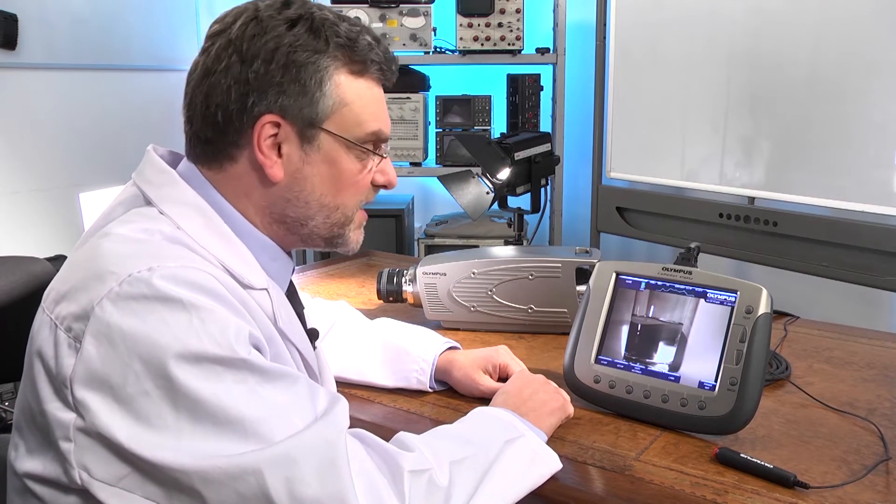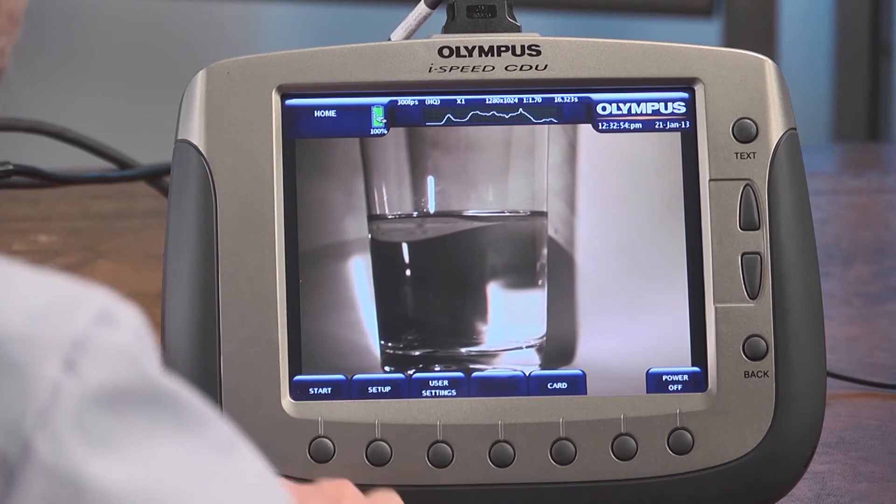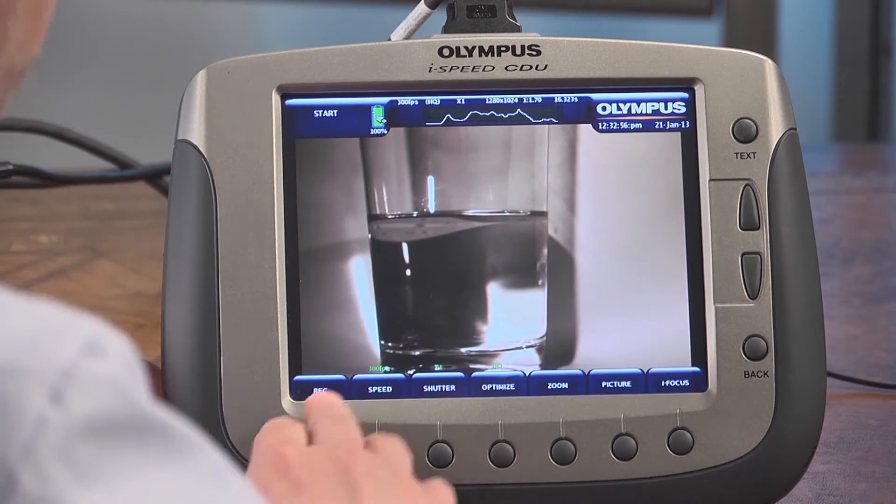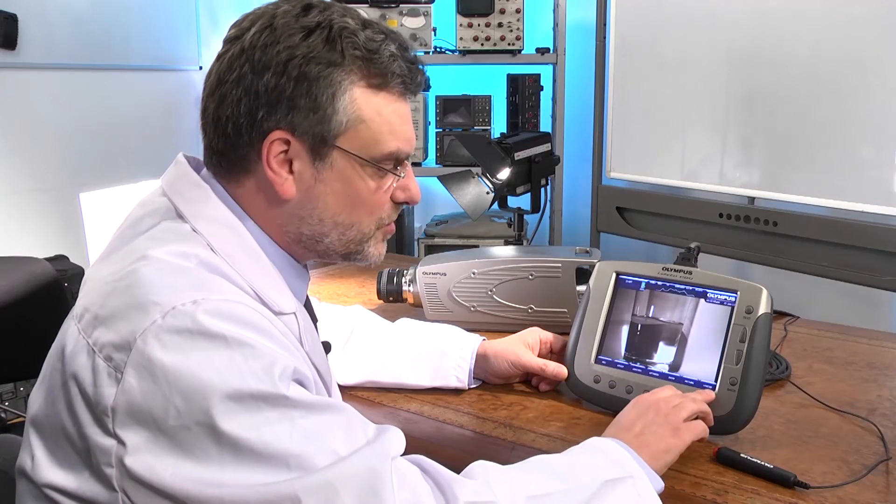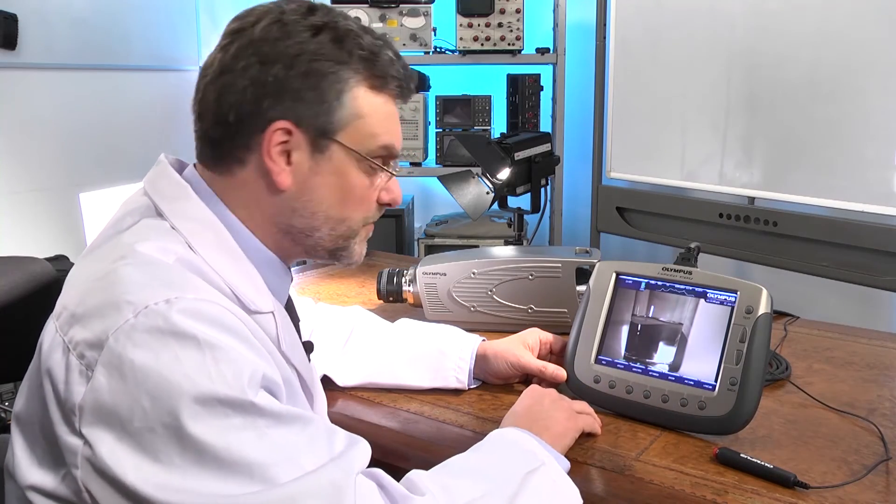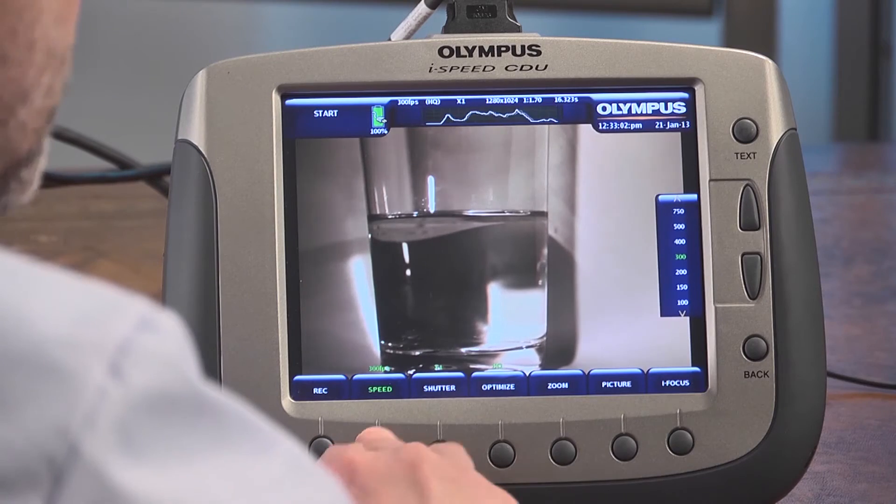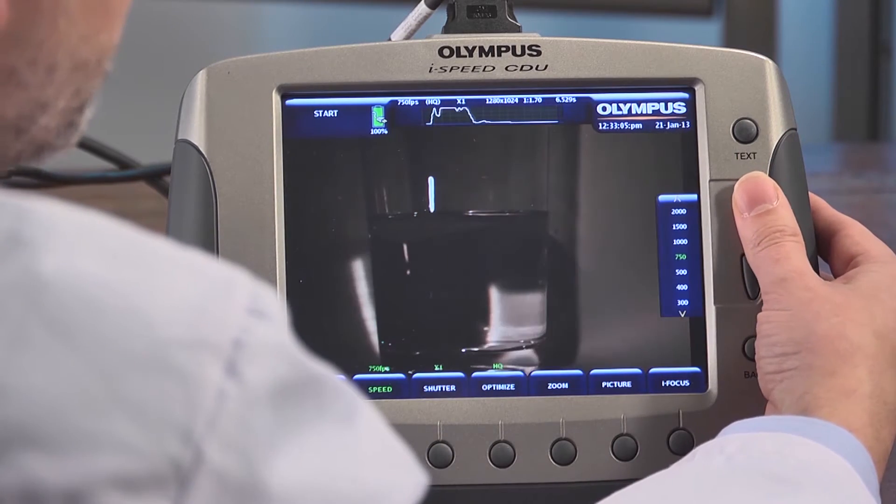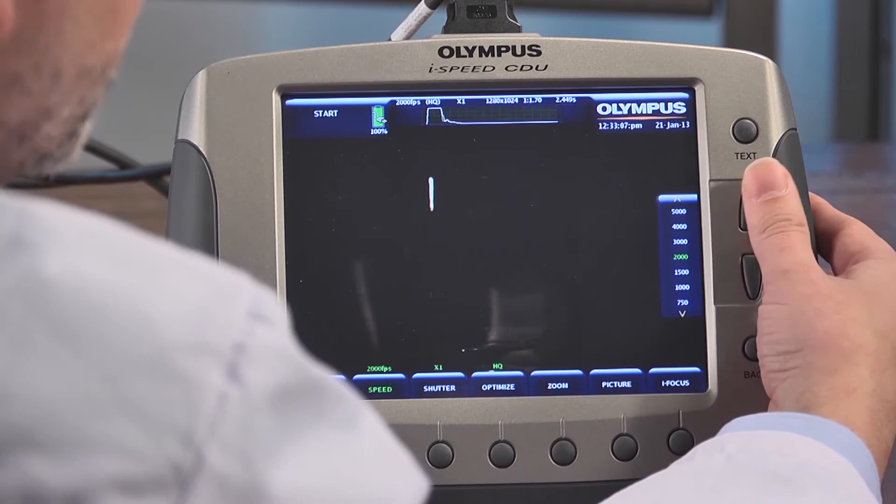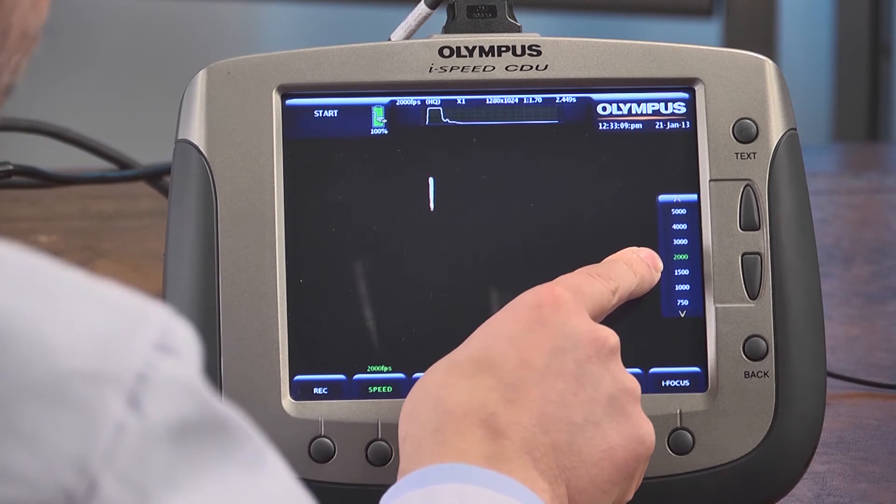OK, so I switched on my camera, it's booted into the home screen and I'm going to press the start button. As you'll see all the major controls are shown here on the bottom of the CDU and today I want to run at 2000 frames. So I press the speed and I press this control to move to 2000 frames a second.